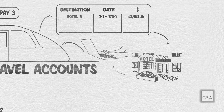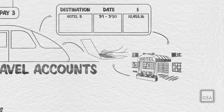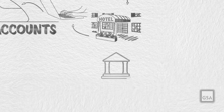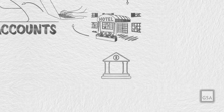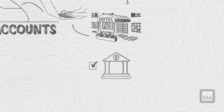The travel supplier charges that account just as they would a standard individually or centrally billed travel card. The unique virtual account number allows the bank to match booking data such as employee ID or cost center through the agency's system.